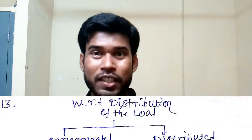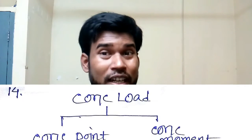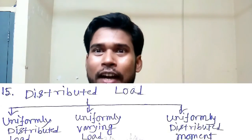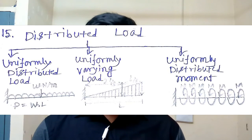Considering variation of load with respect to distribution, we can distinguish load into two criteria: concentrated load and distributed load. Concentrated load can be further differentiated into concentrated point load and concentrated moment. Distributed load can be differentiated into three criteria: uniformly distributed load, uniformly varying load, and uniformly distributed moment.